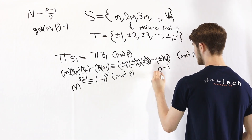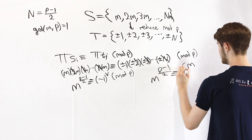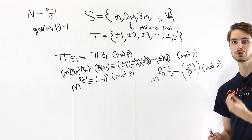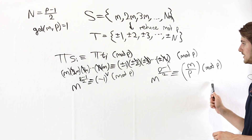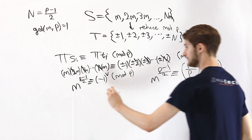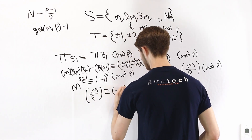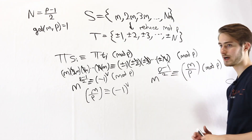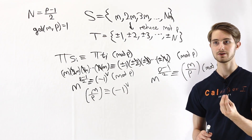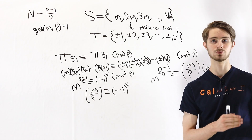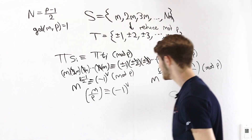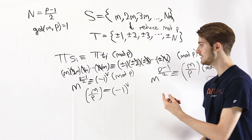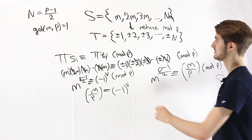We know Euler's criterion, which tells us that m to the power of p minus 1 over 2 is congruent to the Legendre symbol (m/p) mod p — which tells us whether m is a quadratic residue mod p. Since (m/p) is congruent to (-1)^v mod p, and both the Legendre symbol and (-1)^v can only be 1 or negative 1, there's no way for them to differ by a non-zero multiple of p. So they must be equal: (m/p) equals (-1)^v.